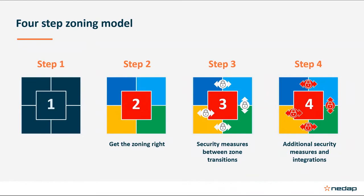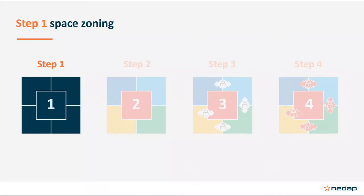I'm going to start off with step one, which is called space zoning. Space zoning involves a schematic overview of zones for your building. The schematic overview will be used to translate into a flow plan, and later on in the zoning model we will look at zone transitions and the advanced security measures that come along with those transitions.